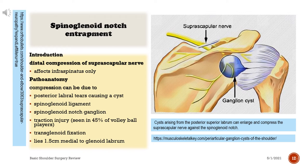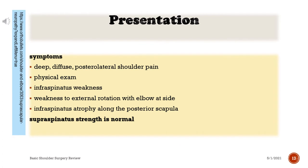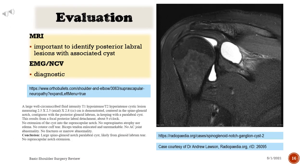Transglenoid fixation lies 1.5 cm medial to the glenoid labrum. Presentation — Symptoms: deep, diffuse, posterolateral shoulder pain. Physical exam: infraspinatus weakness, weakness to external rotation with elbow at side, infraspinatus atrophy along the posterior scapula. Supraspinatus strength is normal. Evaluation: MRI is important to identify posterior labral lesions with associated cyst; EMG/nerve conduction velocity is diagnostic.